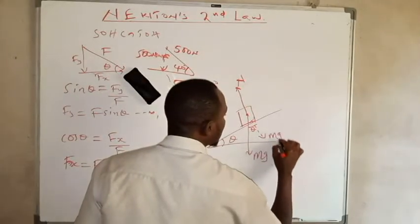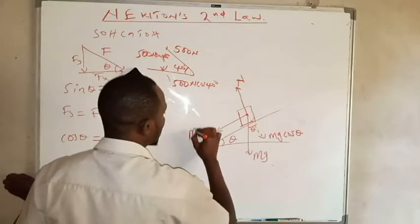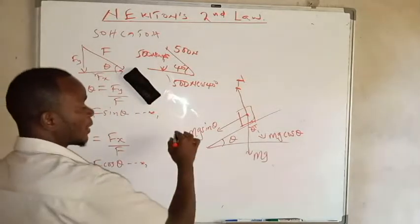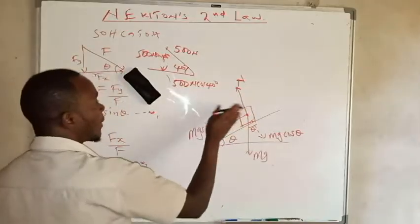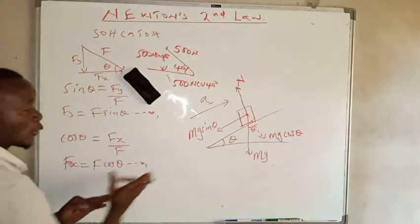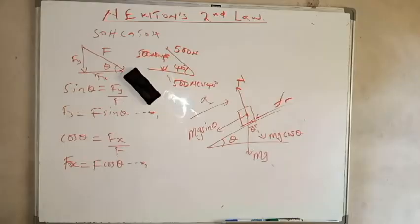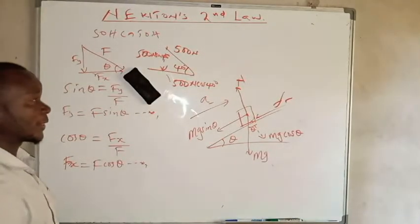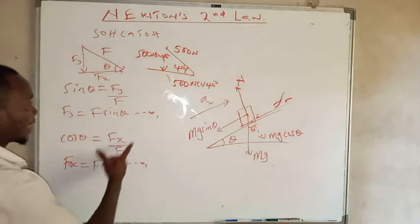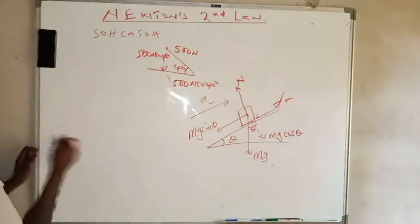In the inclined coordinates, the weight components are mg cosine theta perpendicular to the surface and mg sine theta along the surface. Since the force is pushing the object and giving it acceleration in this direction, the friction force acts in the opposite direction. These are the resolved forces for the 500 newtons that we will use to find the coefficient of kinetic friction.